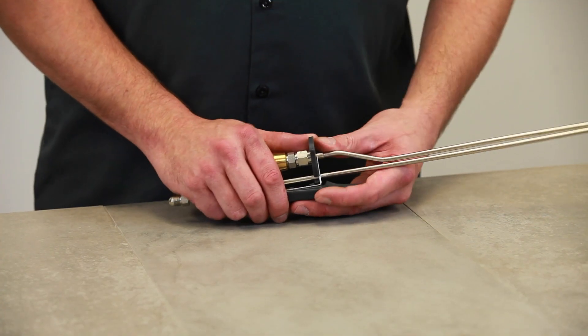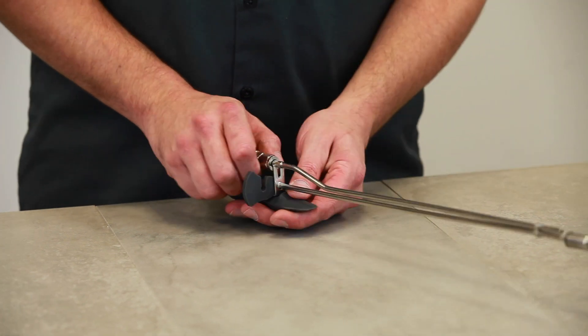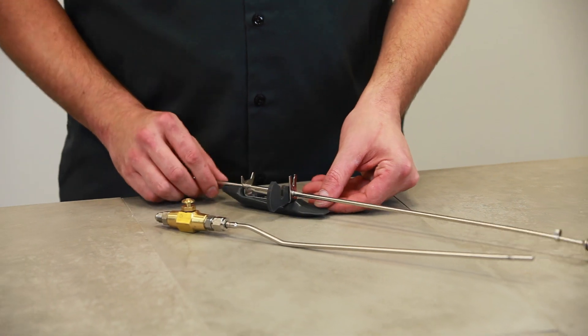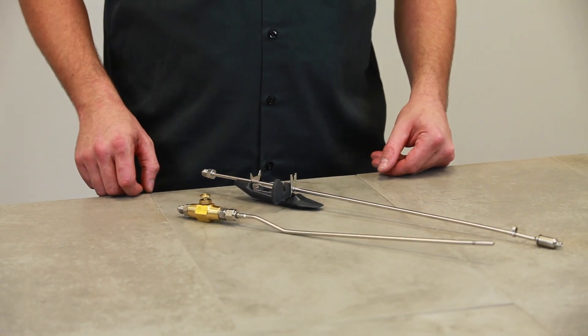To disassemble the Last Straw, first swing the locking latch to the side to detach the two halves of the filler. Then simply lift up on the CO2 purging assembly and gently slide it out of the retaining clip towards the filler.